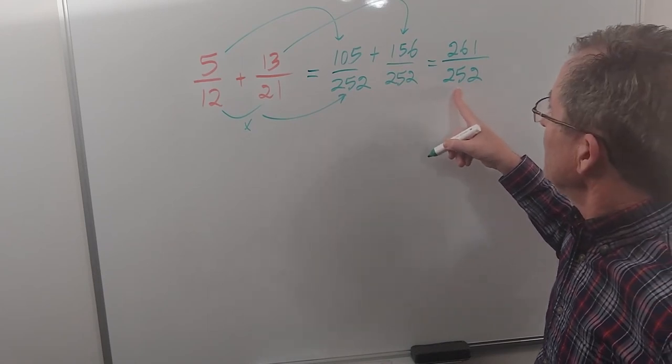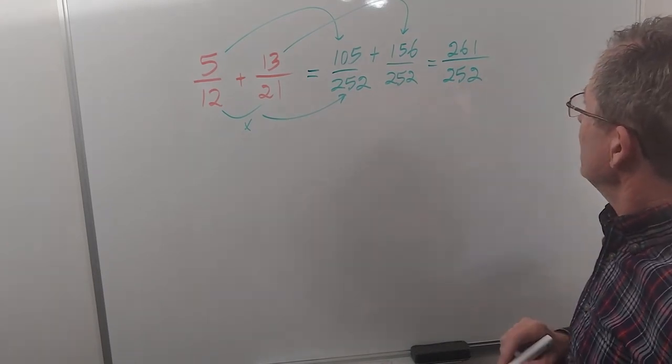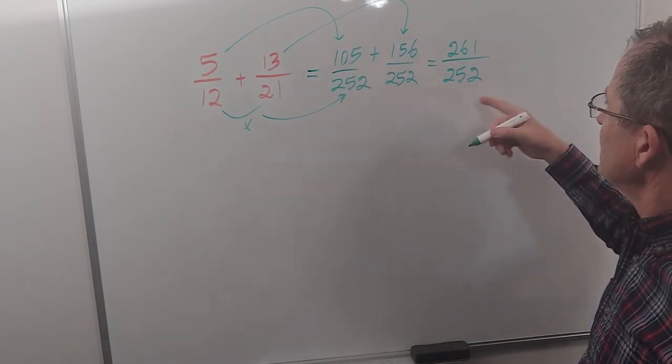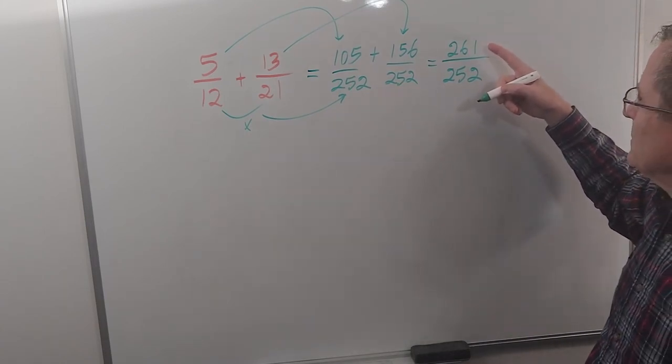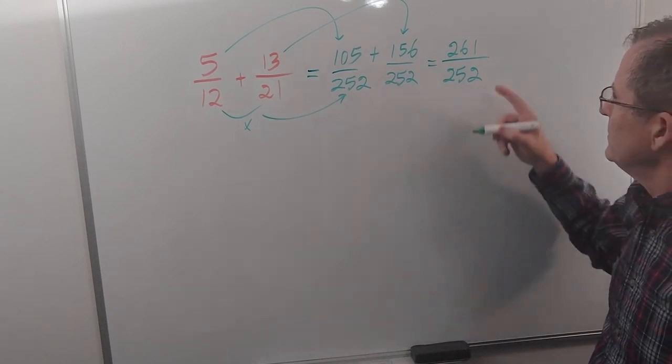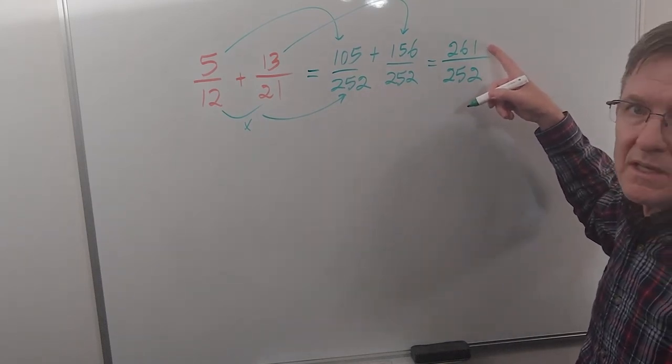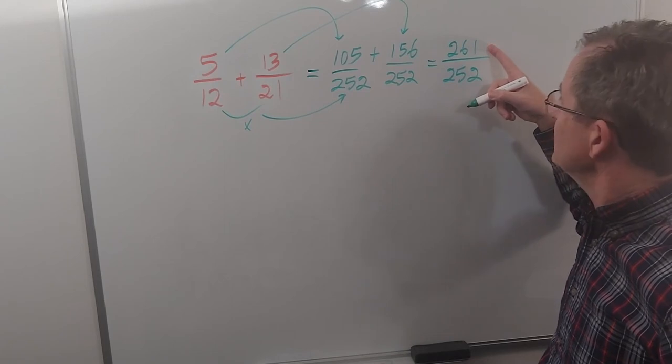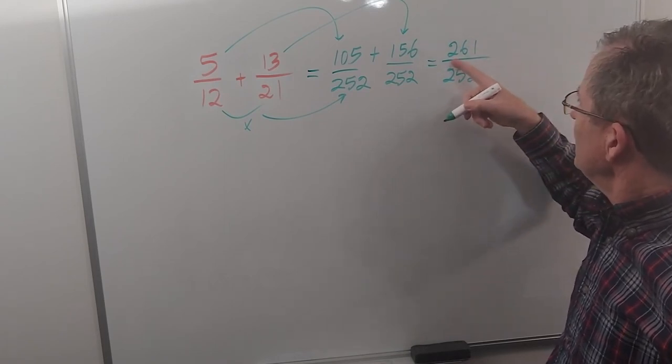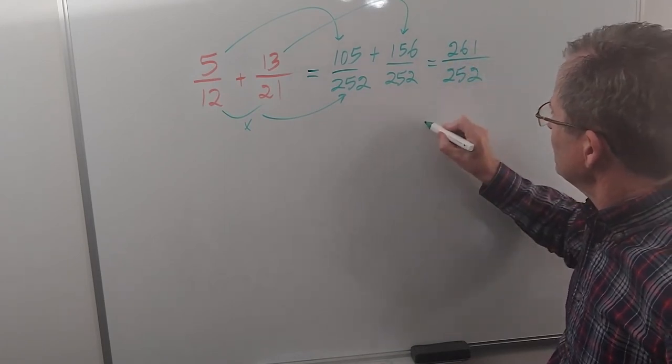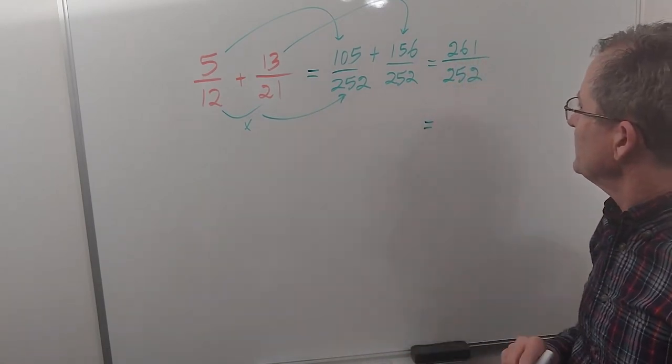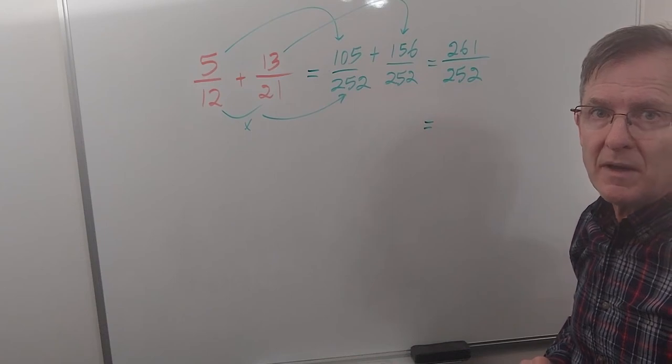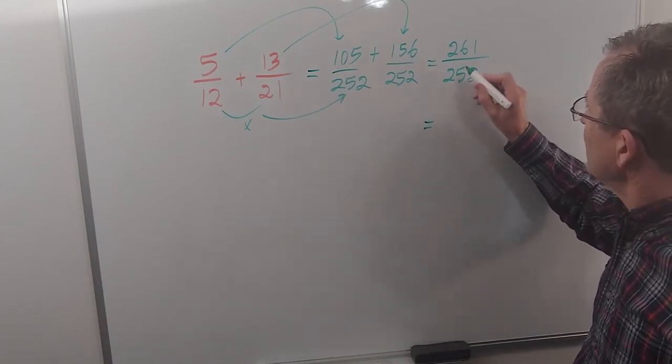And can't we reduce this? Well, we can only reduce this if there's a number that goes into the top and into the bottom. 261 is not divisible by 2, so we can't use 2. But what about 3? 3 is going to work because 2 plus 6 plus 1 is 9, so it's divisible by 3. 2 plus 5 plus 2 is also 9, so it's also divisible by 3. So let's divide by 3.